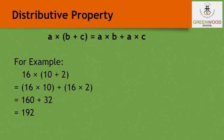Distributive property: a times (b plus c) equals (a times b) plus (a times c). This property is used to make calculations easier. For example, 16 times (10 plus 2): multiply 16 by 10 to get 160, and 16 by 2 to get 32. Then 160 plus 32 equals 192.